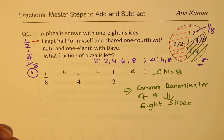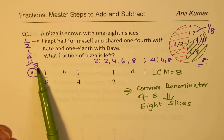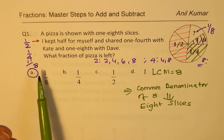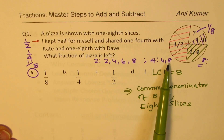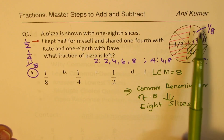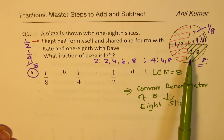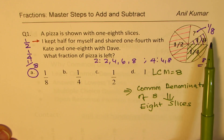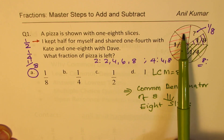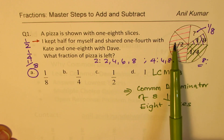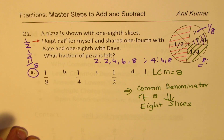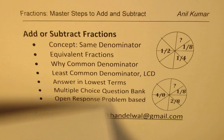I looked at the denominators two, four, and eight, found their multiples, and saw that eight is common. So I divided my pizza into eight equal parts. Half meant four slices, one-fourth meant two slices, one-eighth meant one slice. Adding these: four plus two plus one equals seven slices accounted for, so one slice was left — one-eighth.